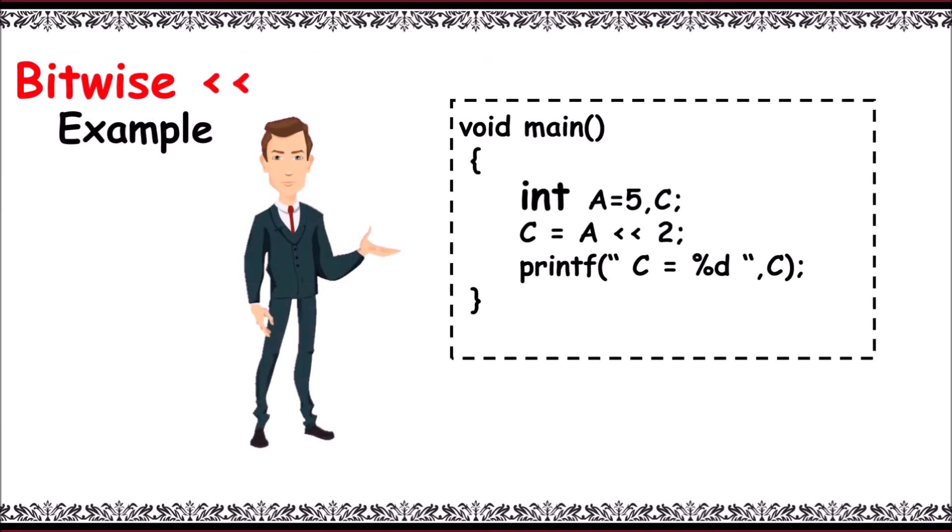Next, in the example program: int a equals 5, c. Now c equals a left shift operation of 2. Left shift operation for a of 2, that is 5 less than less than 2, result will be 20 and it is stored in c. The printf statement prints the result: c equals 20.